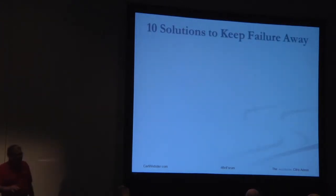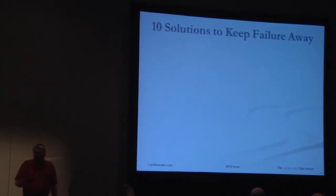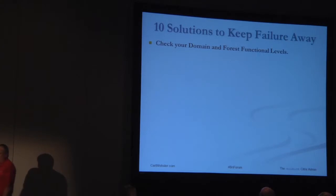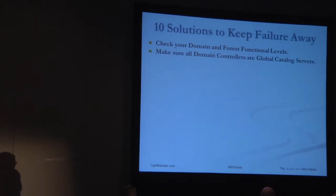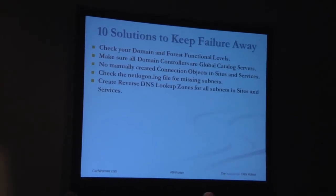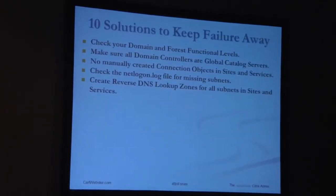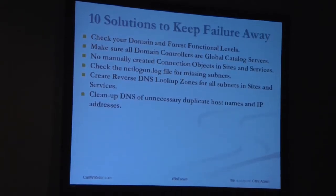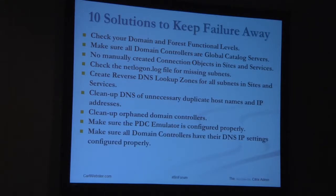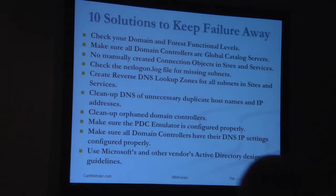Last year at BriForum we covered 10 things in Active Directory that can screw up your desktop and application virtualization efforts. Those 10 things were: check your domain and forest functional levels; make sure all domain controllers are global catalog servers; no manually created connection objects in Sites and Services; check the netlogon.log file on every domain controller for missing subnets; create reverse DNS lookup zones for all those subnets; clean up DNS of unnecessary duplicate host names and IP addresses; clean up orphaned domain controllers; make sure the PDC emulator is configured properly as the authoritative time server; make sure all domain controllers have their DNS IP settings configured properly; and use Microsoft's and other vendors' Active Directory design guidelines.